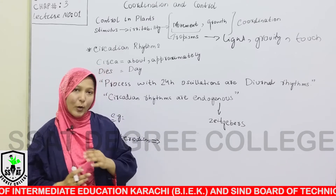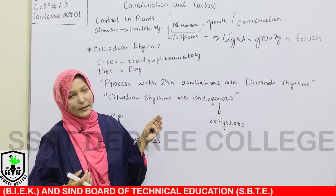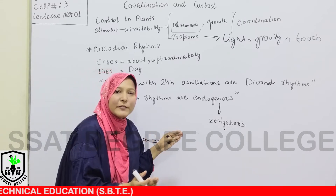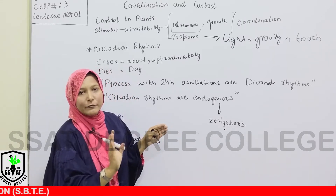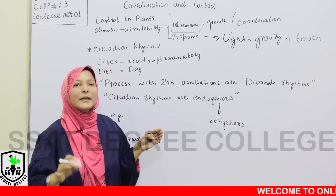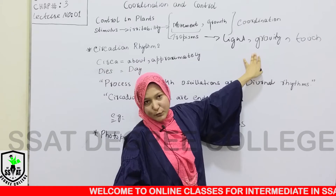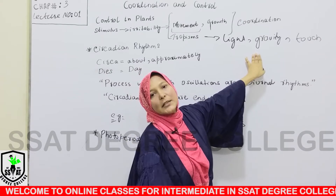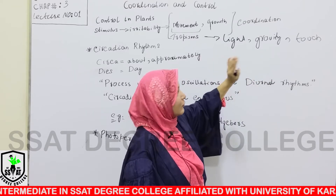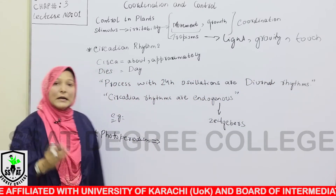If movement is occurring due to light, then growth is also involved — the plant moves its branches toward the light. Along with movement, growth is happening, and these movements are called tropic movements. This phenomenon is called tropism. Movement and growth due to gravity — roots growing downward toward gravity — is gravitational movement, and movement due to touch is called thigmotropism.